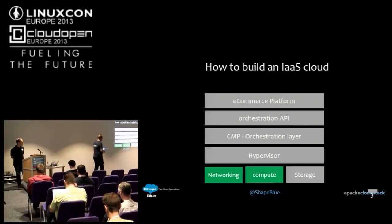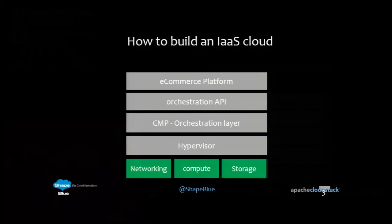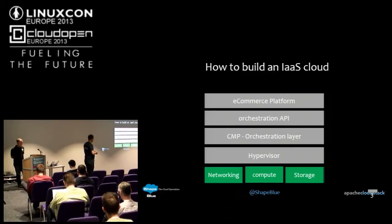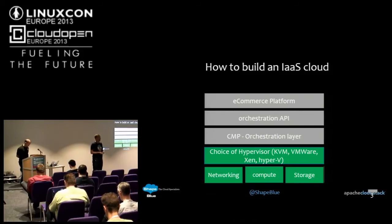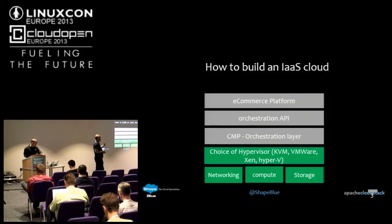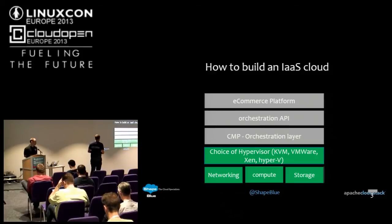What we can do with CloudStack is exploit the fact that organizations have already got those three first components. Most organizations in their data centre have networking, storage, and compute, and we can then make a choice of hypervisor. One of the key things about CloudStack as an orchestration layer is that it releases the tie-in to any particular hypervisor. We support KVM, VMware, Xen, and we're about to start supporting Hyper-V. That opens up situations where we can put workloads onto different hypervisors depending on the use case, and we can move workloads around between those hypervisors. CloudStack then pulls all of that together.